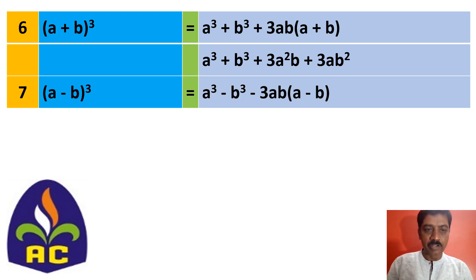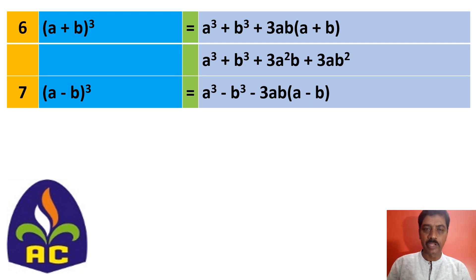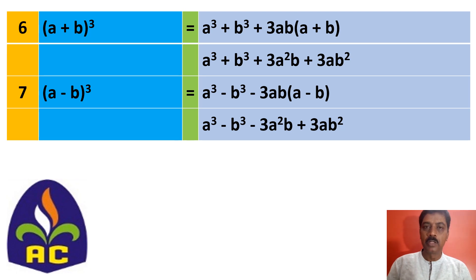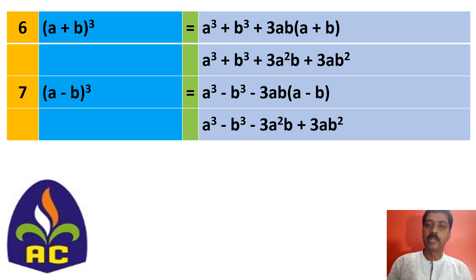The seventh identity is a minus b, all cubed, that is a cubed minus b cubed minus 3ab into a minus b. When you expand minus 3ab into a minus b, it opens as a cubed minus b cubed minus 3a squared b plus 3ab squared. These expanded forms are very useful in solving many mathematical questions.